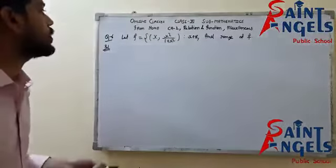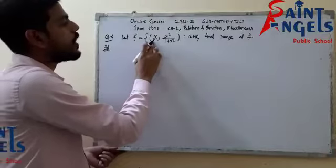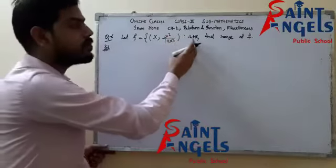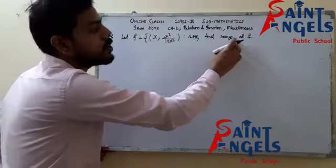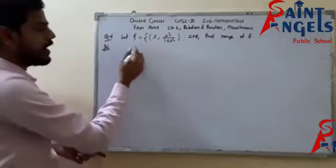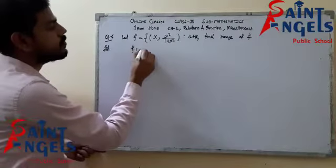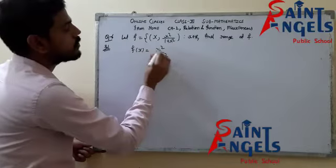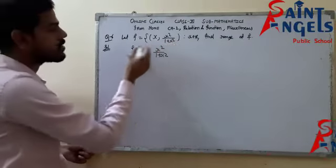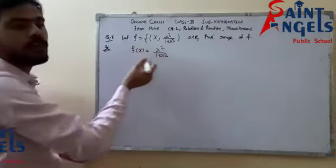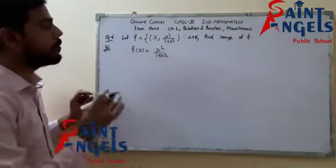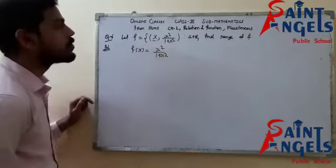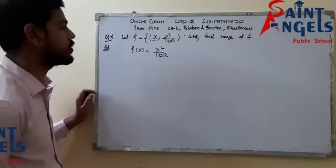Now we turn to question number 6: f = {(x, x²/(1 + x²))} where the domain is the set of real numbers — find the range of f. This is actually f(x) = x²/(1 + x²). It was given in ordered pair form, meaning the image of x is x²/(1 + x²). We have to find the range of this function.